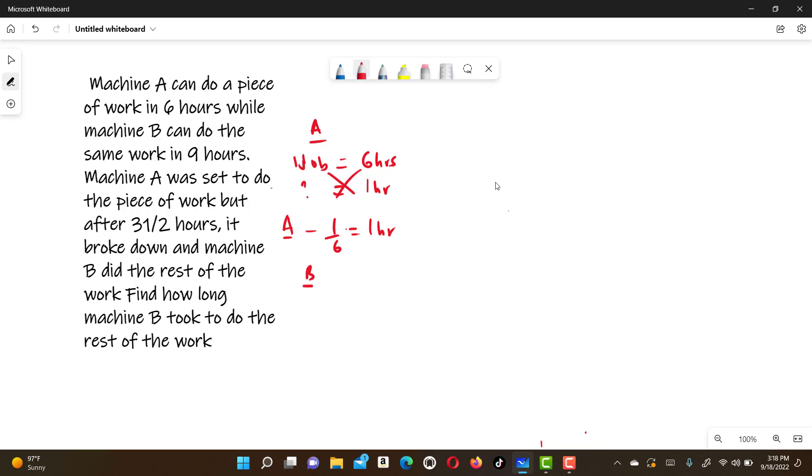Same applies to machine B. One job it can do in nine hours. So in one hour, machine B can do one over nine.